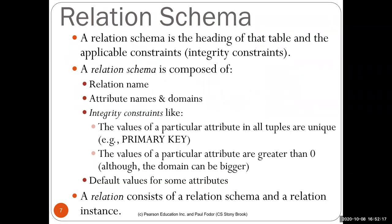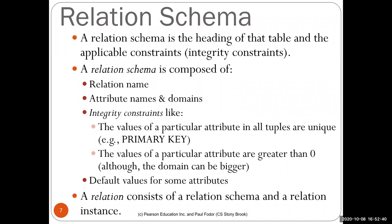When we talk about relational databases, the first thing to define is the schema. A relation schema is the headings of that table and applicable constraints — integrity constraints like a primary key, which specifies that an attribute has a unique value for all rows. You can also have cardinality constraints — for instance, that a class does not have more than 150 students. So a schema has multiple parts and integrity constraints are part of it.